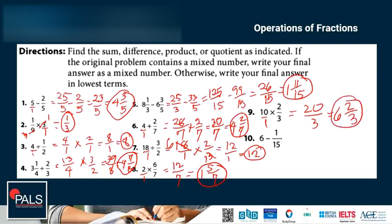Number 10. 6 minus 1 over 15. This is 1. So we have 90 over 15 minus 1 over 15. The answer is 89 over 15. Then change to mixed number, the answer is 5 and 14 over 15.